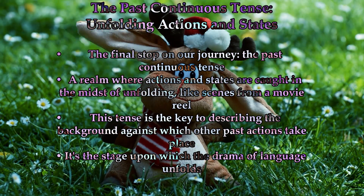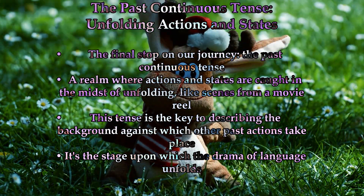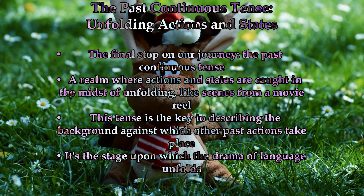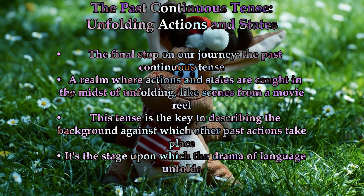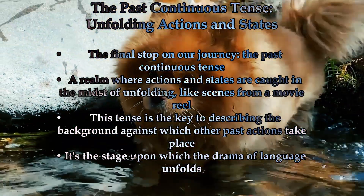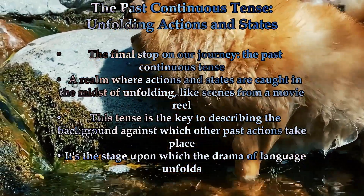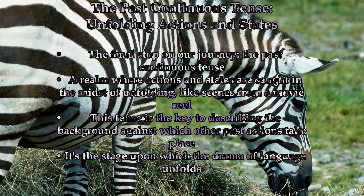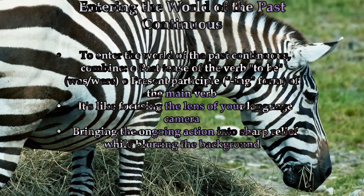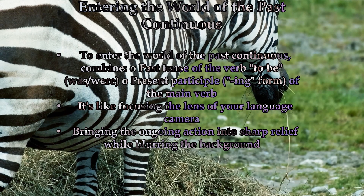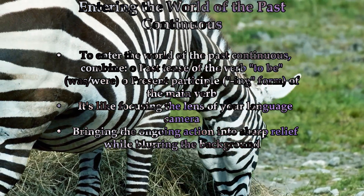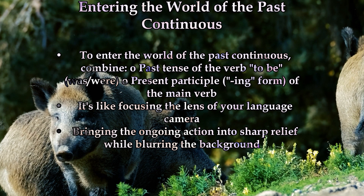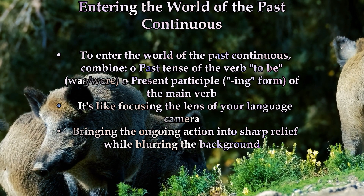Part three: the past continuous tense — exploring the unfolding past. The final stop on our journey through the past tense is the past continuous tense, a realm where actions and states are caught in the midst of unfolding, like scenes from a movie reel. This tense is the key to describing the background against which other past actions take place. To enter the world of the past continuous, we combine the past tense of the verb 'to be' — 'was' or 'were' — with the present participle (the 'ing' form) of the main verb.